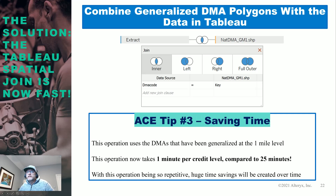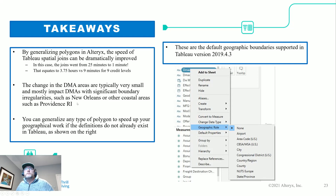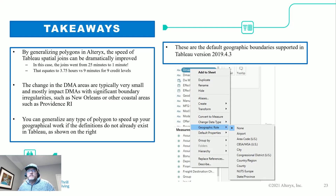Taking the extract into Tableau with the one-mile generalized polygon boundary, the operation now takes one minute compared to 25 minutes. The takeaways: by generalizing polygons in Alteryx, the speed of Tableau joins can be dramatically improved. I went from 25 minutes to one minute per credit level — almost four hours versus nine minutes total. That's a dramatic improvement, and when you're doing this month after month, it's a huge time savings. The change in DMA areas at one-mile generalization is small and only visible upon zooming in.